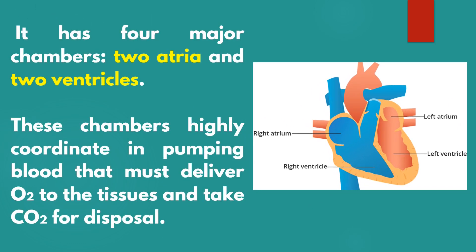The heart beats powerfully and continuously throughout an entire lifetime without any rest, so cardiac muscle has evolved to have incredibly high contractile strength and endurance. It has four major chambers: two atria and two ventricles. These chambers highly coordinate in pumping blood to deliver oxygen to the tissues and remove carbon dioxide for disposal.